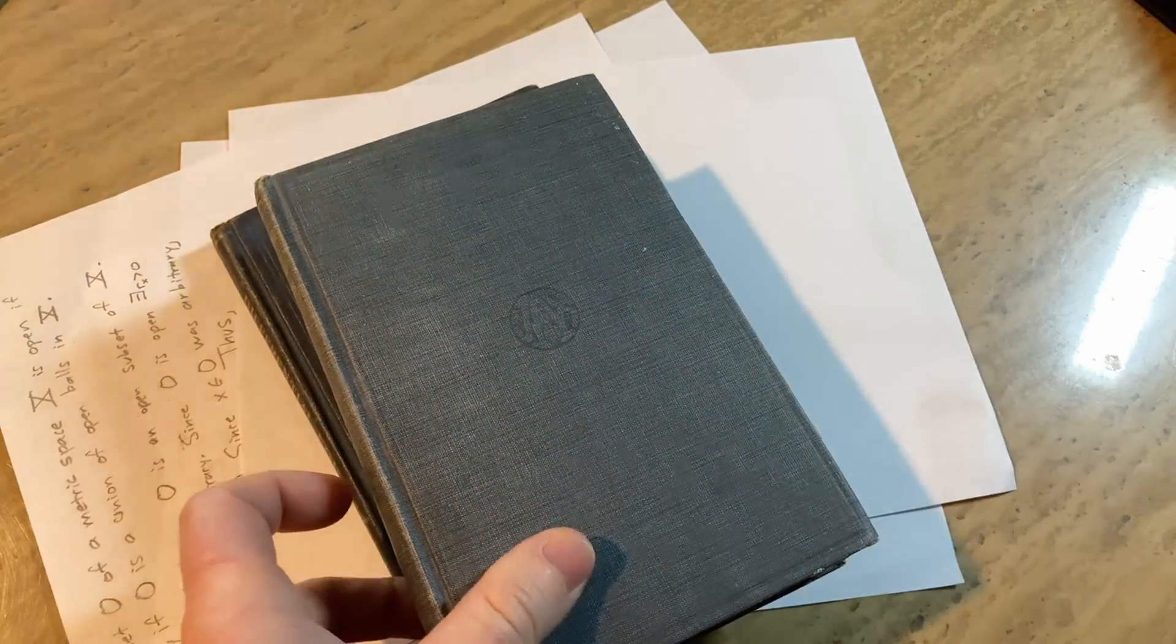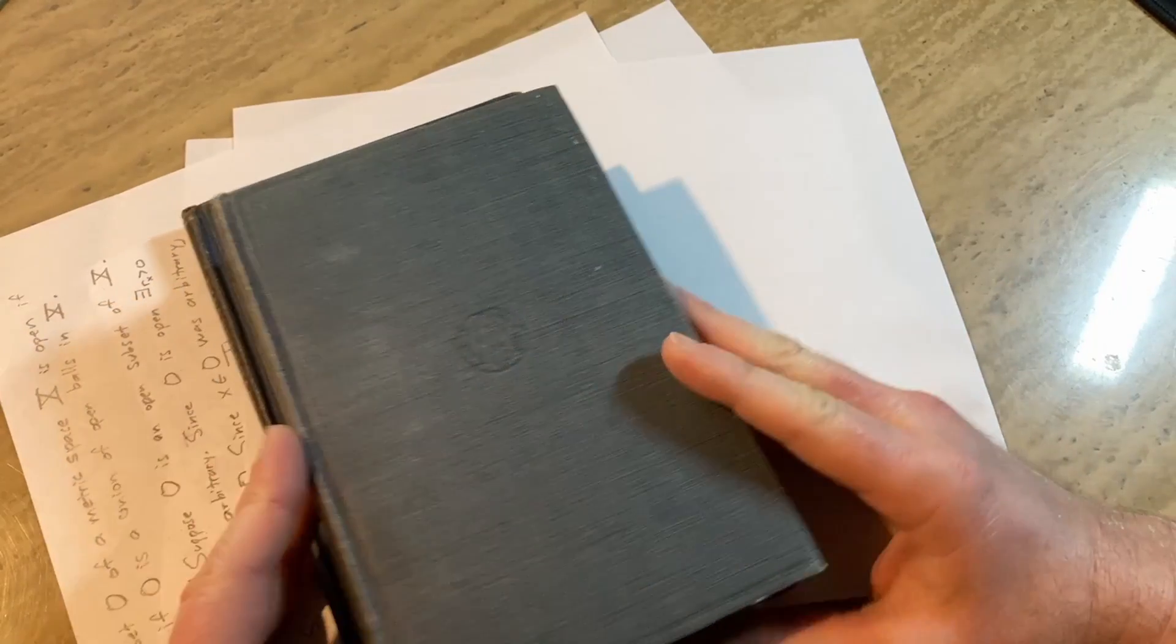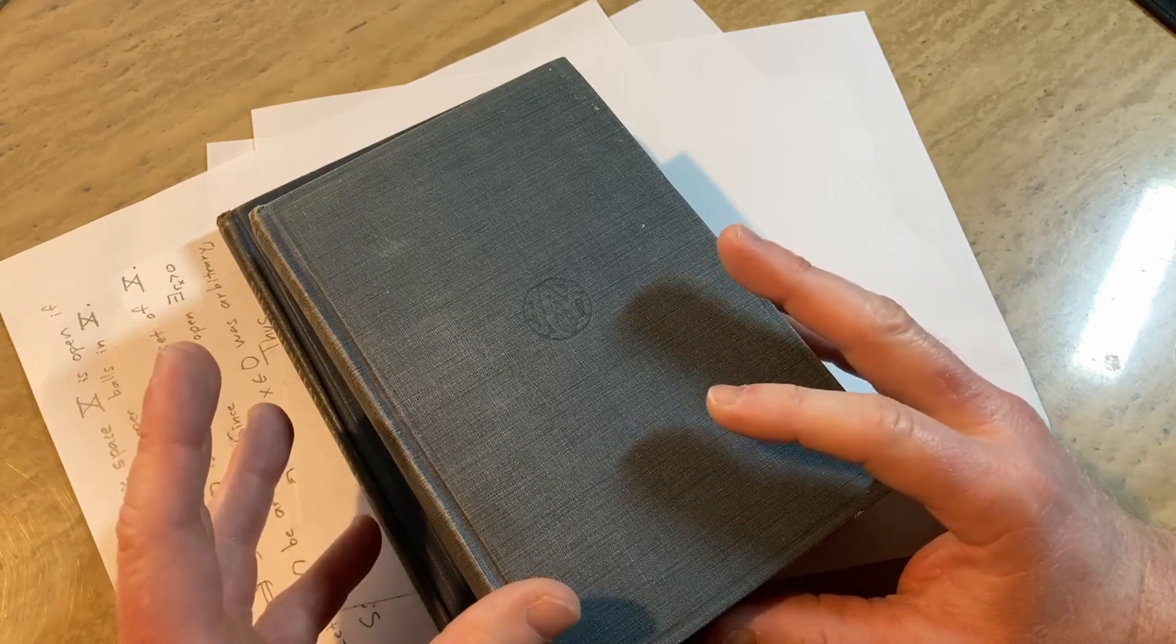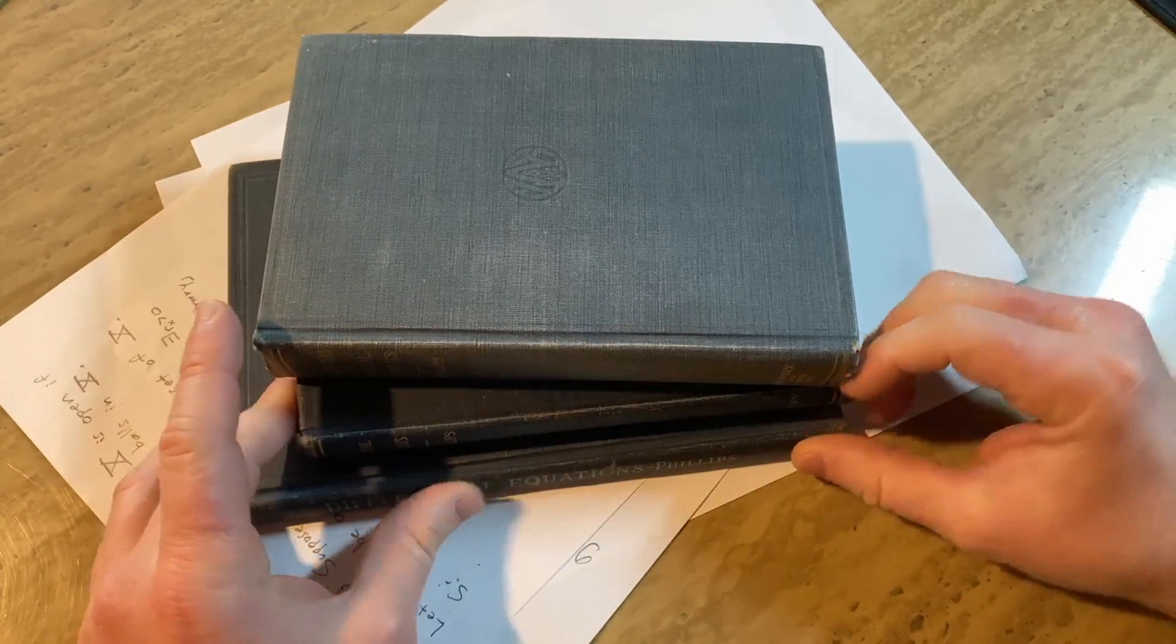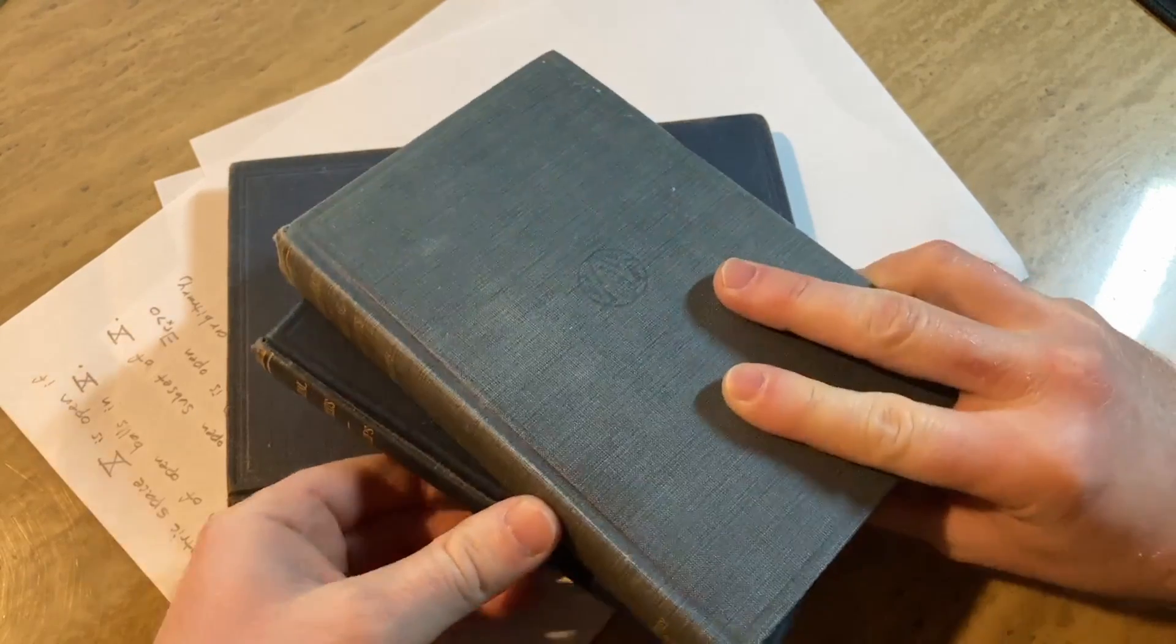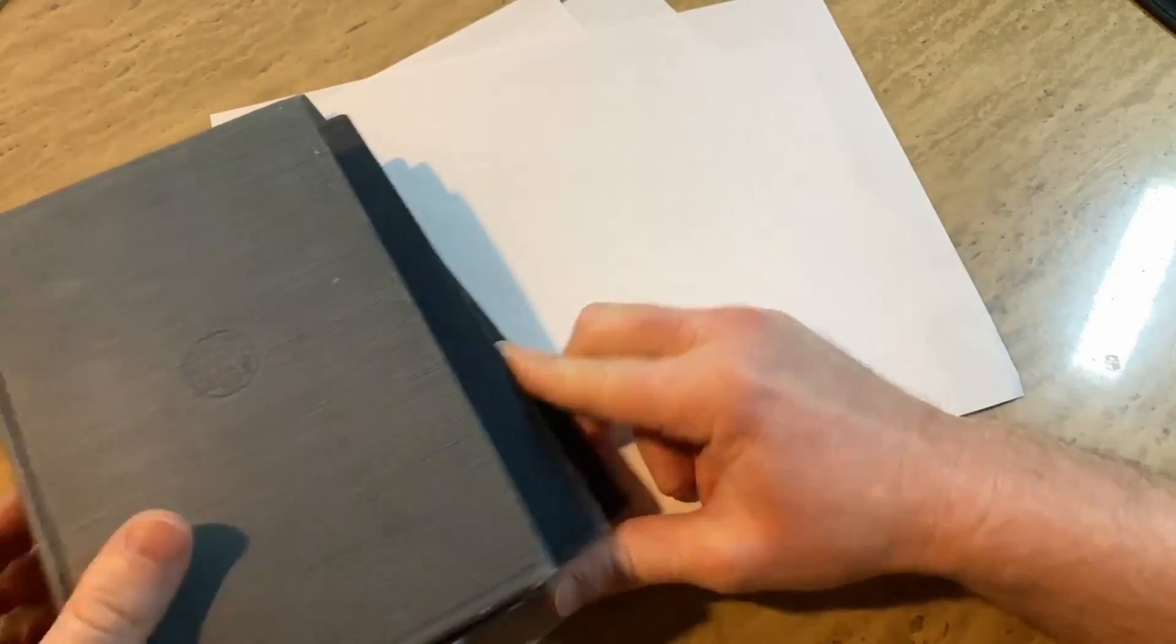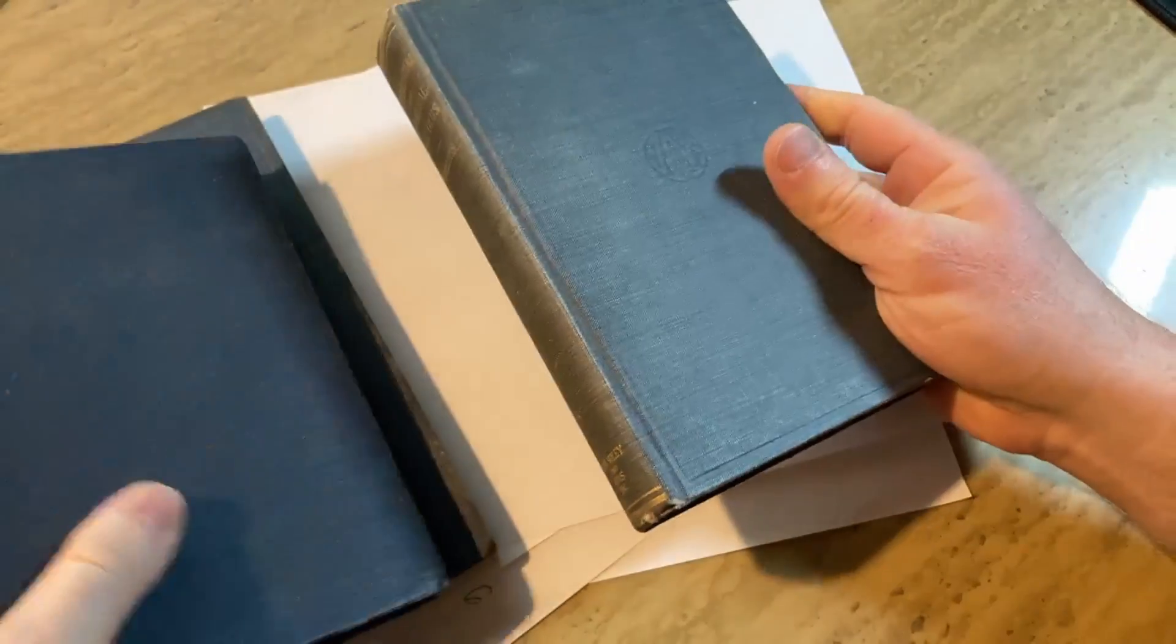We have Integral Calculus, we have the combined Differential and Integral Calculus, and then we have Differential Equations by Phillips. So these are books written by the head of the math department at MIT. He also wrote a book on geometry and a book on vector analysis and a book on analytical geometry and calculus. I bought the vector analysis book, I know I have it, I can't find it.